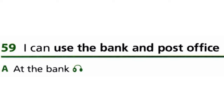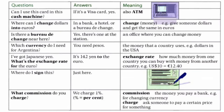Unit 59: I can use the bank and post office. The first part of this unit is about at the bank. We can see a box here with three parts: questions, answers, and meaning.